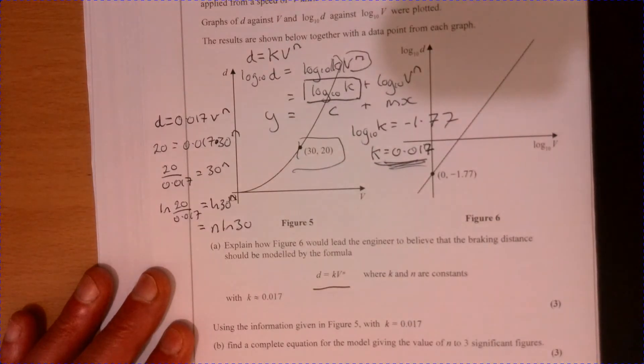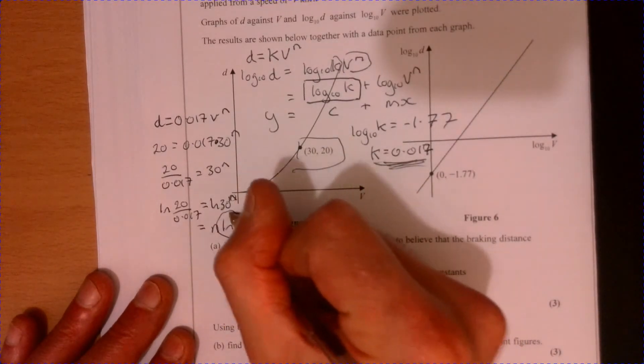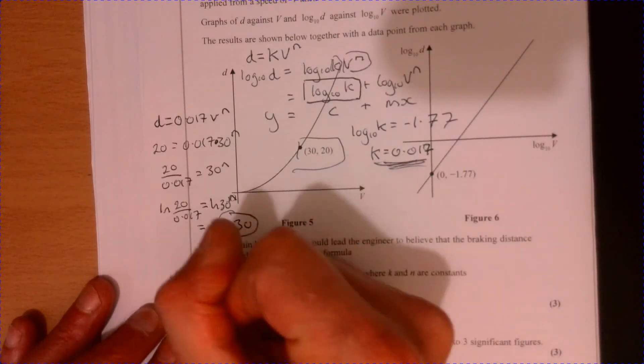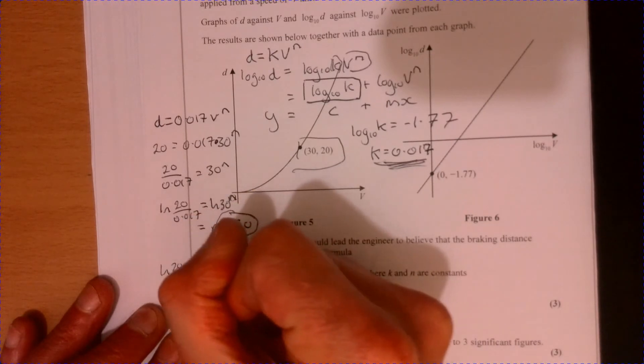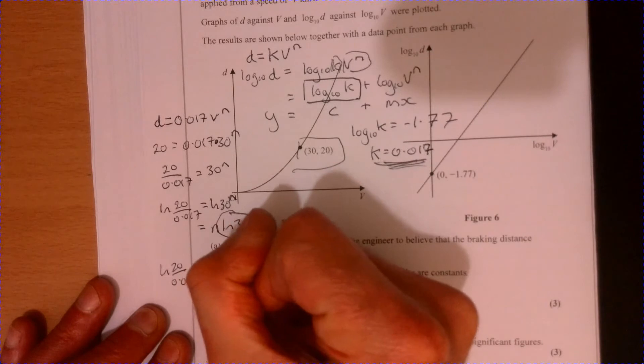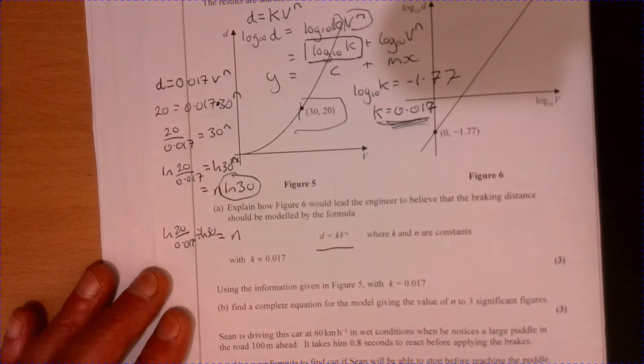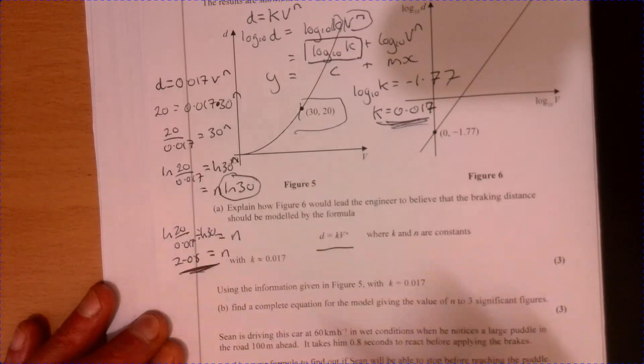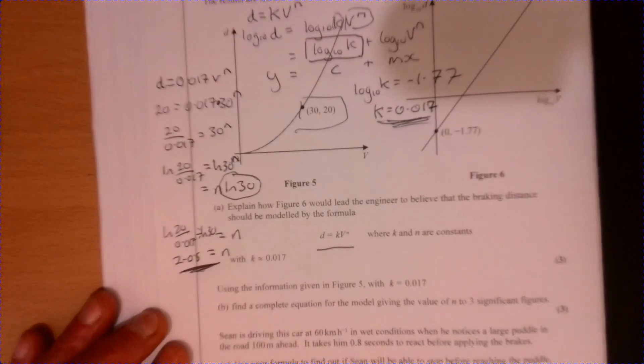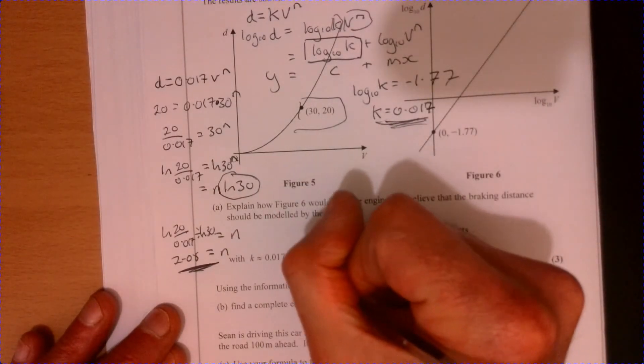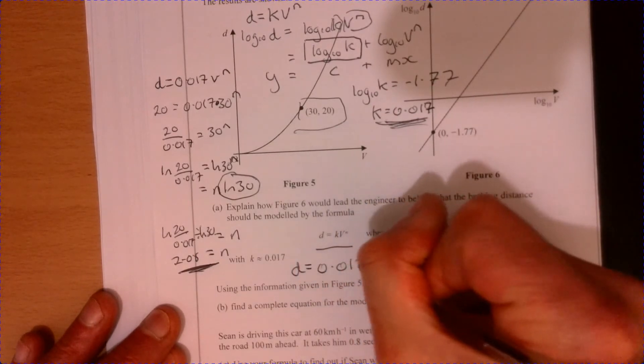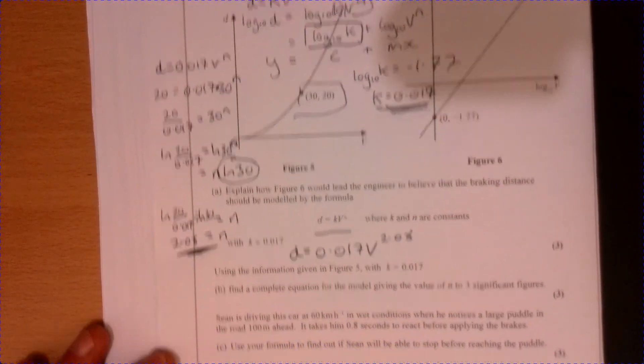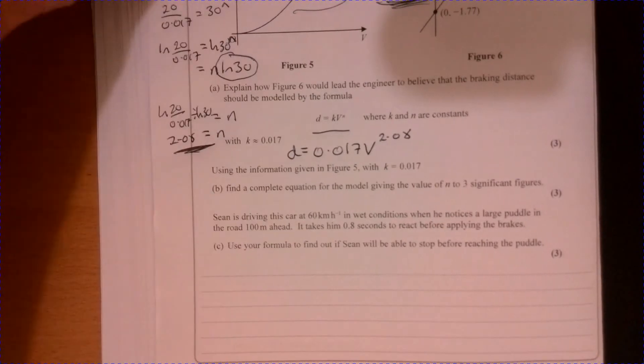We're going to get that divide by log 30. So n is going to equal log 20 over 0.17 divide by log 30, and that will give you n equals 2.08. Write out the new equation: d equals 0.017 v to the power of 2.08.